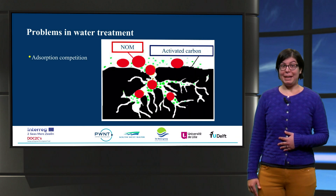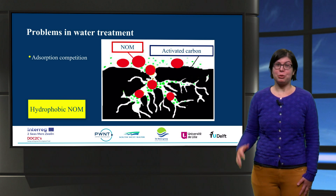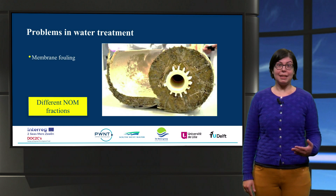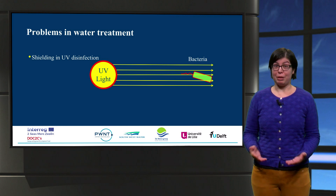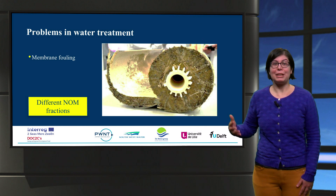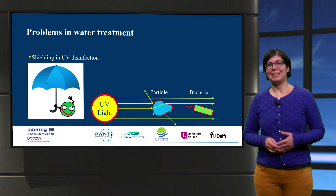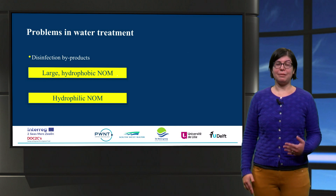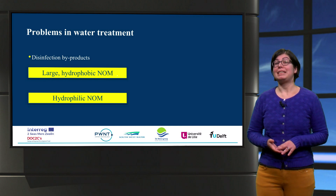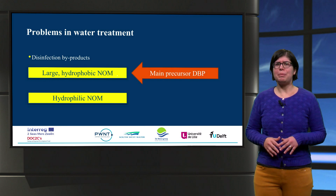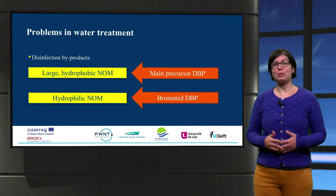NOM also influences the removal of other pollutants during treatment. For example, NOM competes for absorption surface sites on activated carbon, which is usually caused by hydrophobic NOM fractions. Different fractions of NOM cause membrane fouling. Moreover, NOM can reduce the efficiency of UV disinfection and NOM particles can shield microorganisms. NOM is also a precursor of disinfection by-products. DBPs are formed when NOM reacts with chlorine or other disinfectants. Large hydrophobic NOM is considered the main precursor of DBPs but hydrophilic NOM can form toxic brominated DBPs.